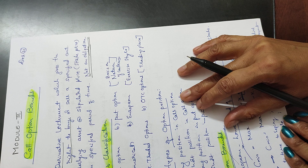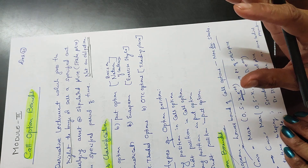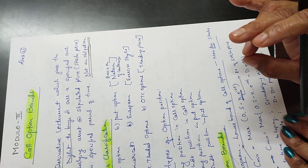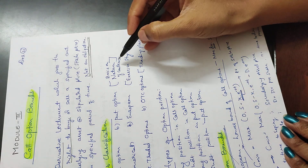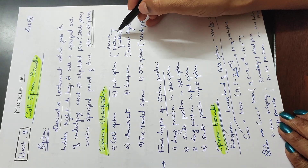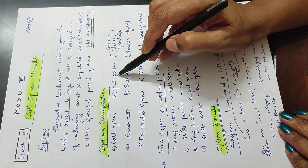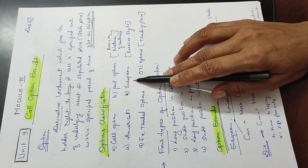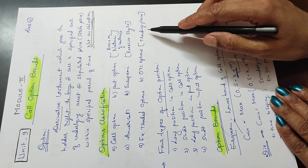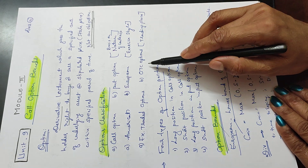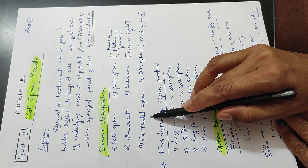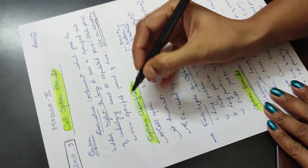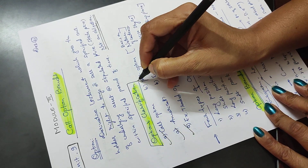Options classification has 5 to 6 types. Based on the nature of the contract: call option and put option. Based on exercise style: American option and European option. Based on trading places: OTC options (over the counter options) and exchange-traded options. These are the classifications of options.